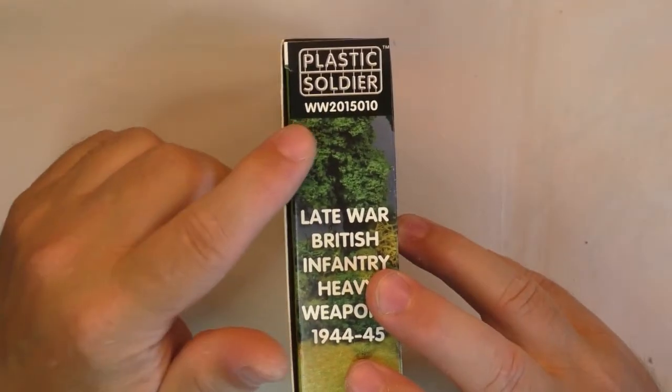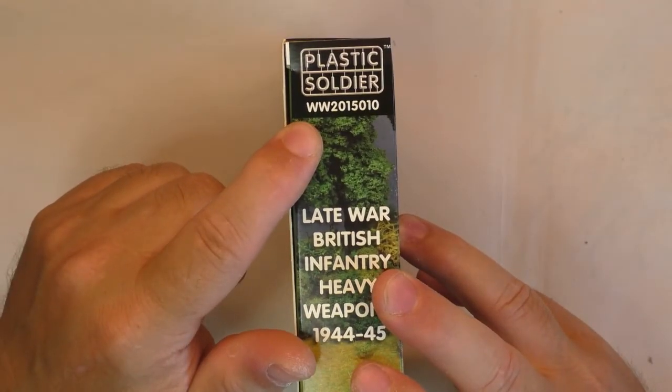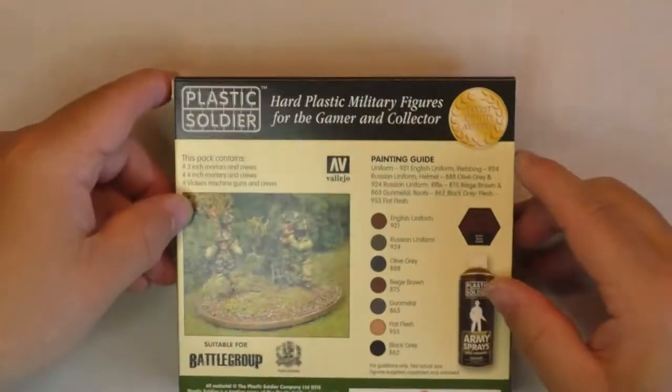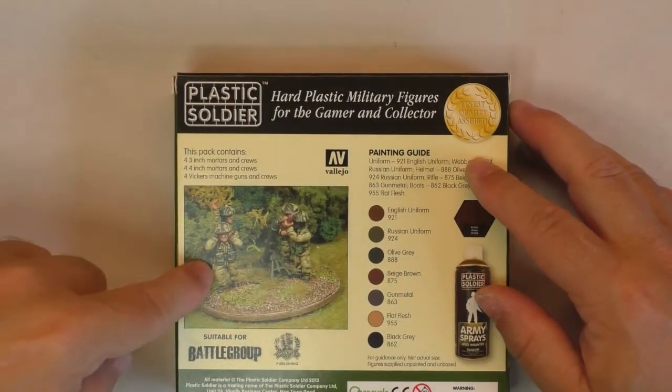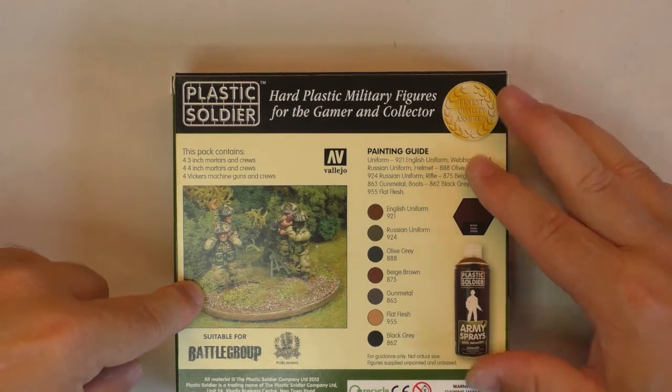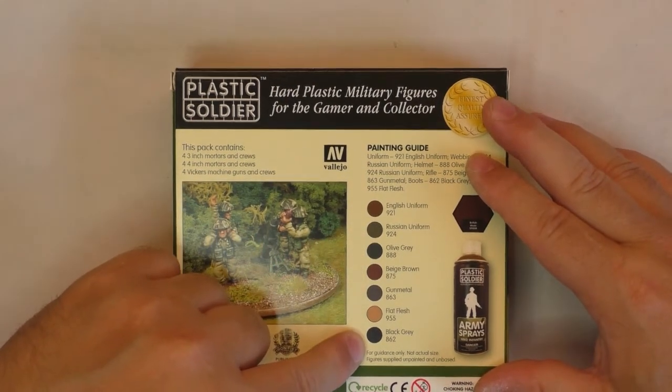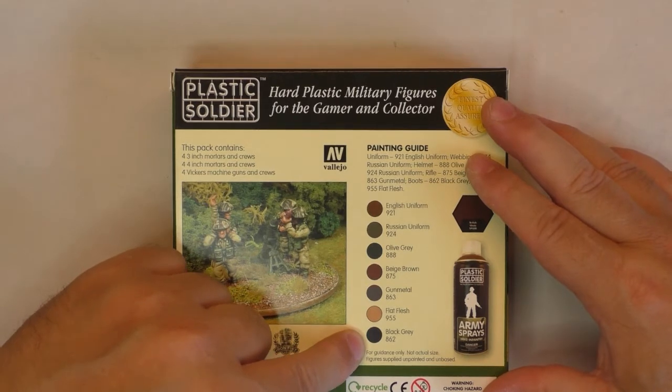On the side we got WW20150110, the kit number from Plastic Soldier. In the back we have a bigger picture of the crew of the four-inch mortar and one suggestion to paint your crew or your teams.